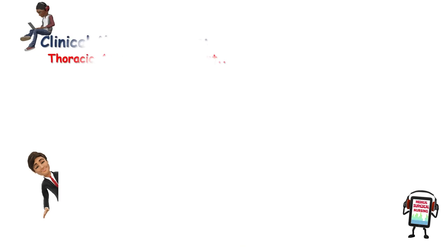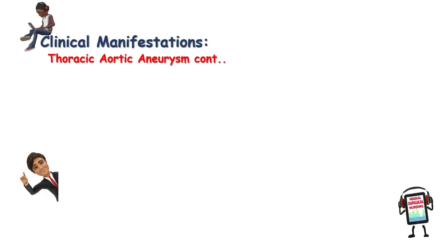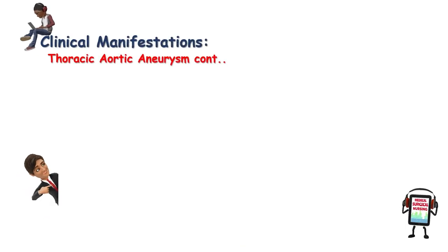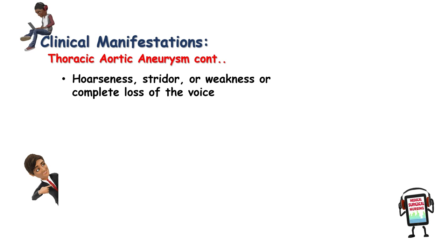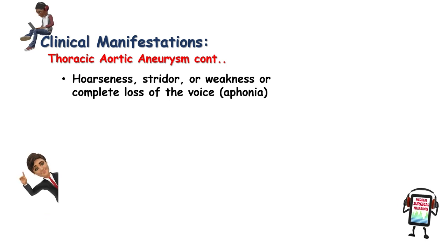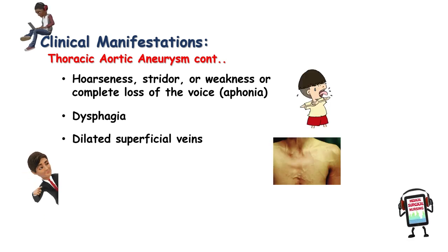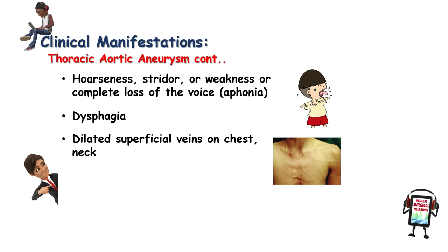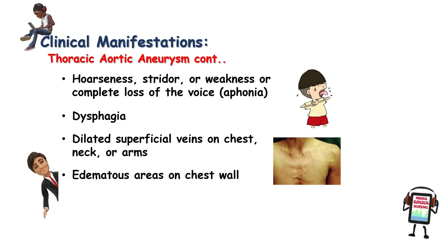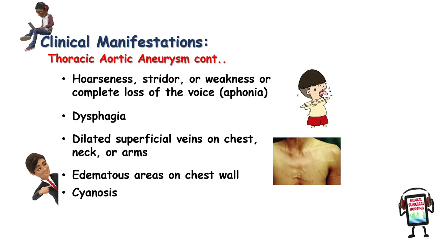Continuing with thoracic aortic aneurysm clinical manifestations: hoarseness, stridor, or weakness, or complete loss of voice — called aphonia. Dysphagia refers to difficulty swallowing. Dilated superficial veins on the chest, neck, or arms. Edematous areas on the chest wall. Cyanosis, and unequal pupils.